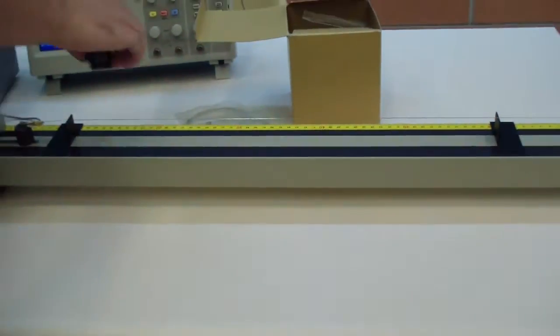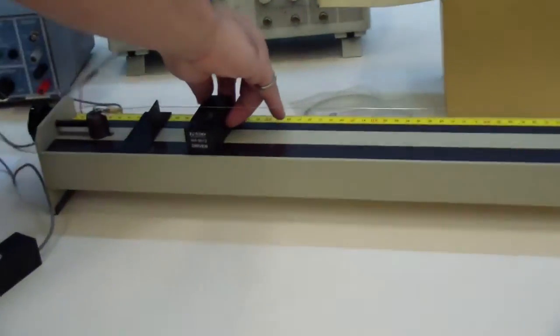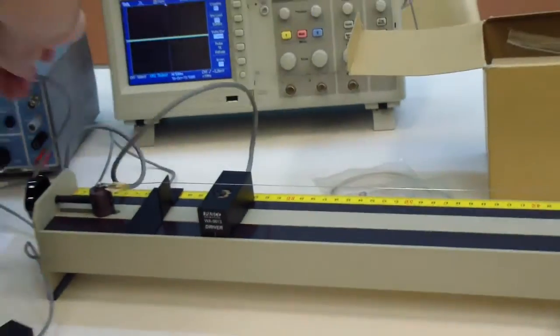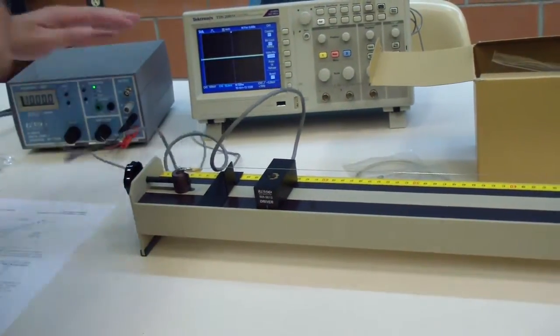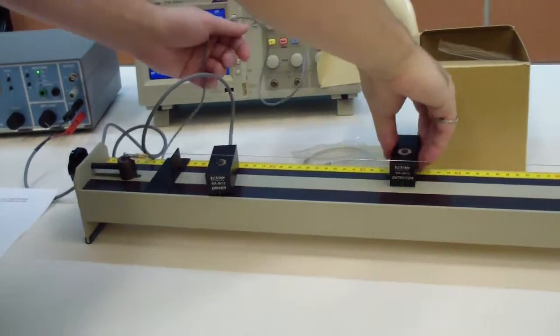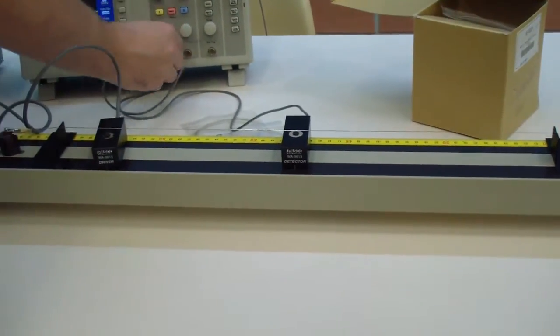Insert the driver coil about 5cm away from one of the bridges. Insert the detector somewhere in the middle. Note that you may need to move it around either to get enough signal or to avoid the guitar string hitting it.